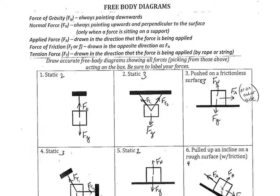Let's look at some free body diagrams. Basically, what free body diagrams are is a way to add up all the forces that are acting on an object, and also draw them all out so we can see what forces add up in the first place. So when we have something that is static — meaning an object is not moving — if we're not sure where to start, we know for sure gravity is pulling it down.